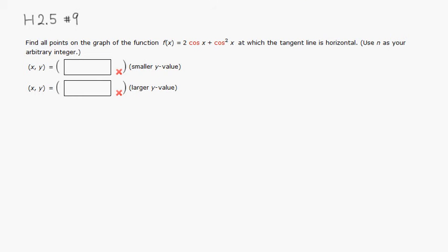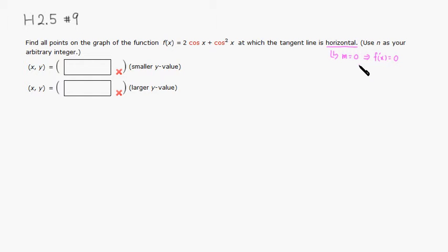As soon as you hear 'horizontal tangent line,' we should immediately think that the slope is going to be zero. That means the derivative is going to be equal to zero, since the derivative tells us about the slope of the tangent line. So let's take the derivative and set it equal to zero.